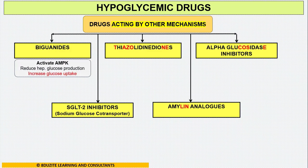Biguanides activate the enzyme AMPK, thereby reducing hepatic glucose production and increasing glucose uptake. There is only one important drug available here, which is metformin, and this is the most common anti-diabetic drug used across the world.